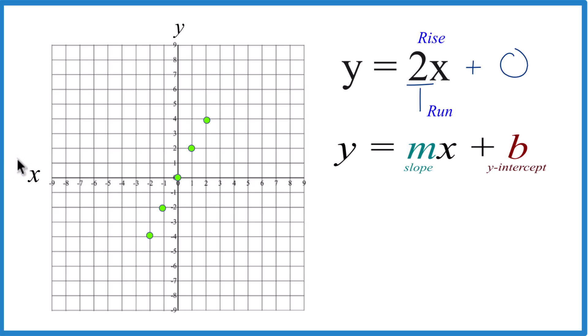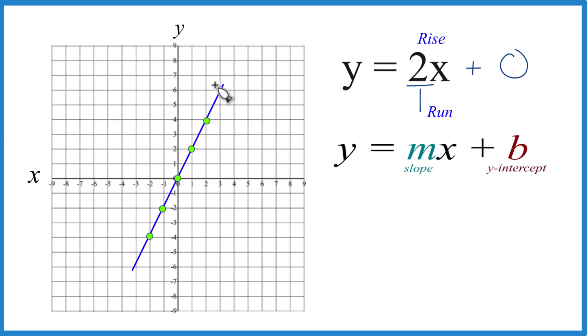There's the line for the equation y equals 2x. Let's put a line through that, and we'll put arrows to show it goes to infinity, and we're done. We've graphed the equation y equals 2x using slope-intercept form. It's Dr. B, and thanks for watchin'.